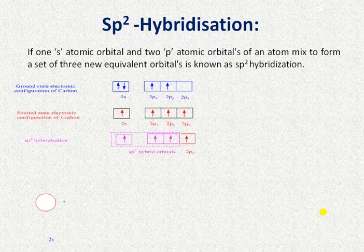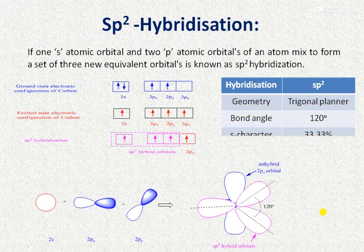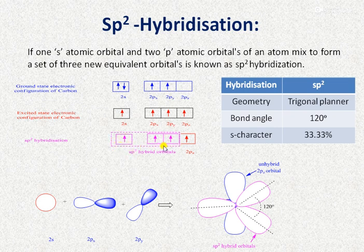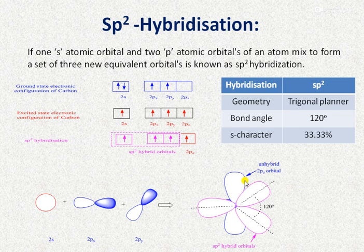In sp2 hybridization, one s atomic orbital and two p atomic orbitals (px and py) of an atom combine to form a set of three new equivalent orbitals. The 2pz atomic orbital remains unhybridized. Three new sp2 hybrid orbitals are formed with trigonal planar geometry, a bond angle of 120 degrees, and 33.33% s-character.